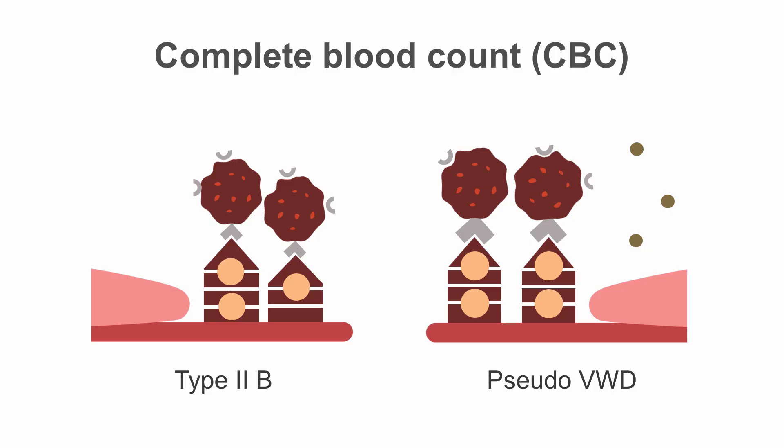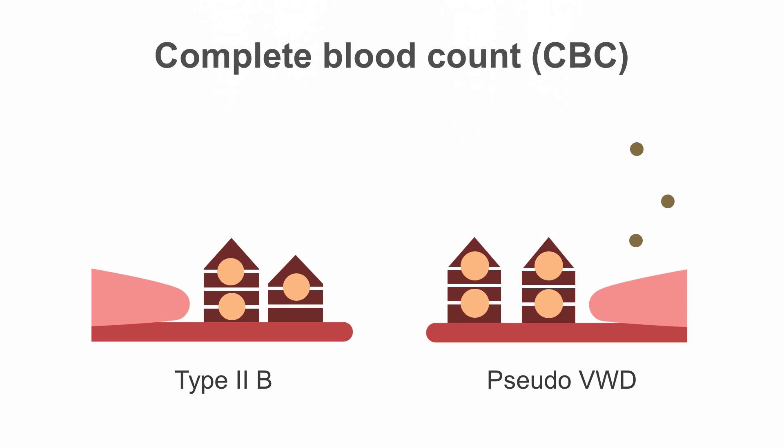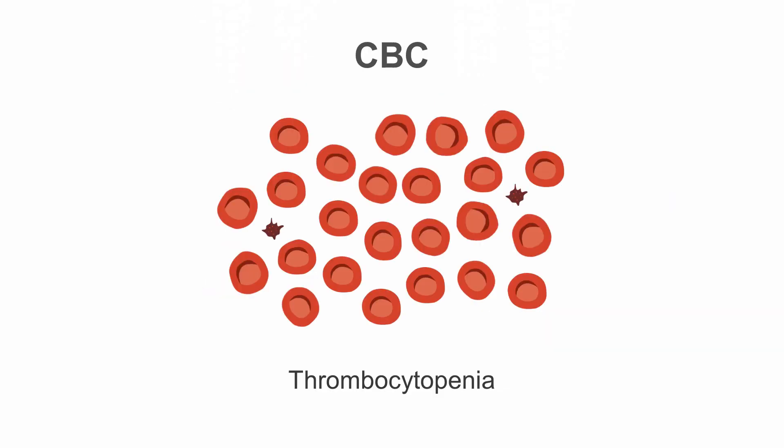Here we're going to discuss the various tests for von Willebrand's disease. Patients with von Willebrand's disease may demonstrate thrombocytopenia in cases of type 2B or pseudo von Willebrand's disease. In both of these types there is increased binding of von Willebrand's factor with the platelets, resulting in increased consumption of the platelets and resultant thrombocytopenia.